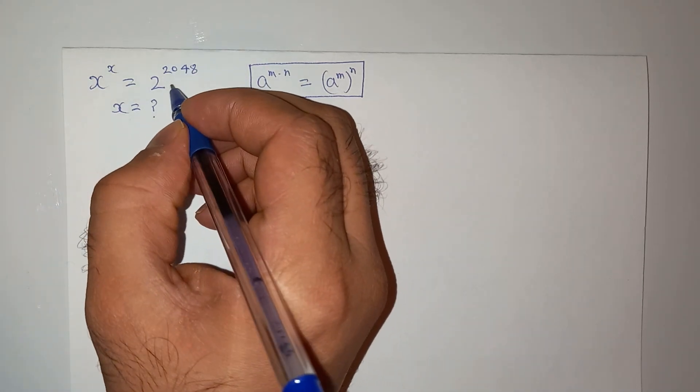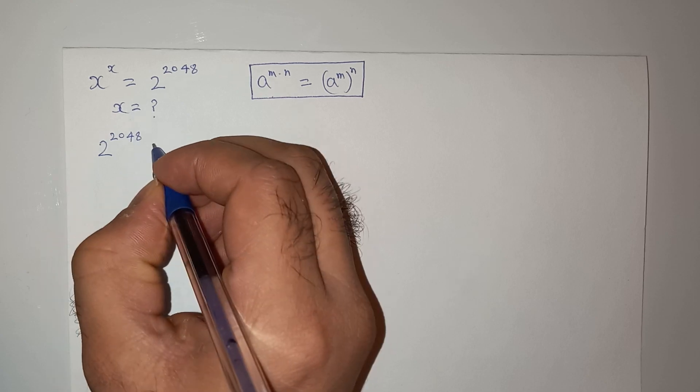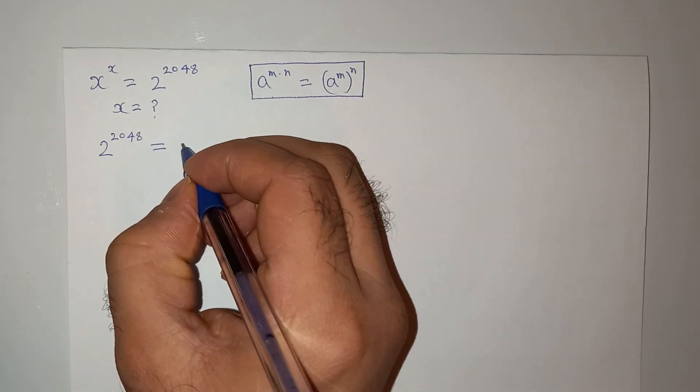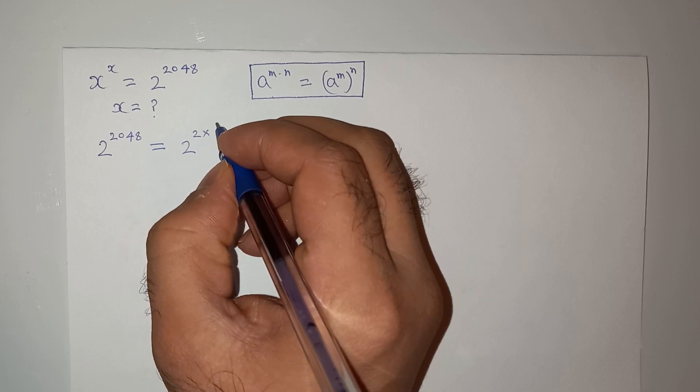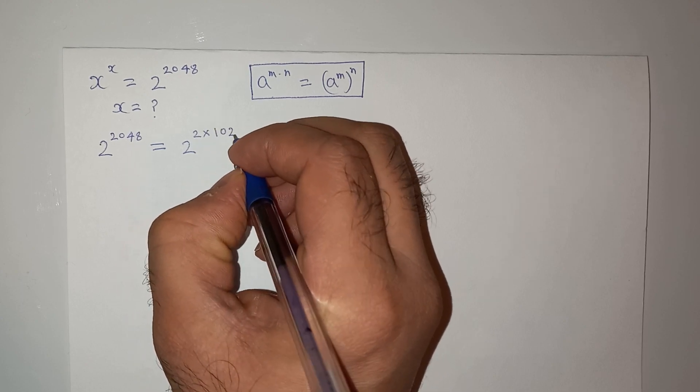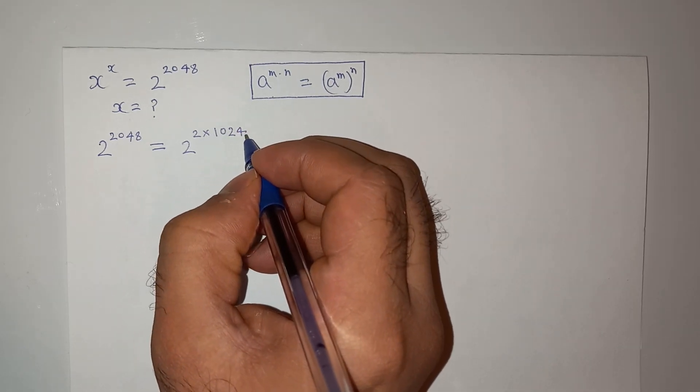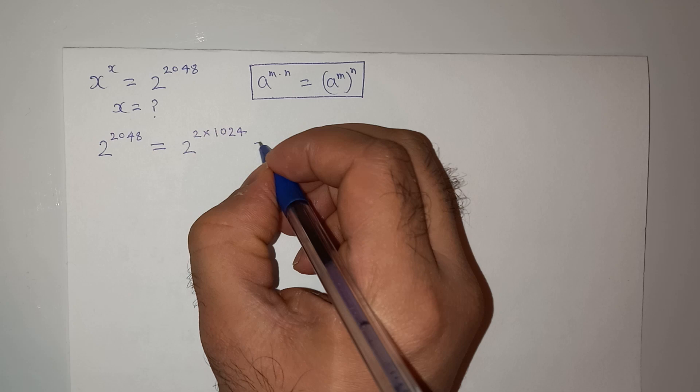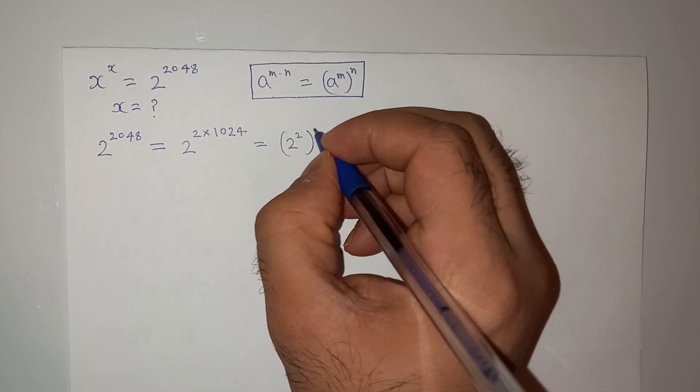I'm going to solve this right-hand side which is 2^2048. So I can write this as 2^(2×1024). I can write this as (2^2)^1024 as per this rule. So 2^2 is 4 and this is 4^1024.